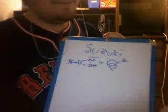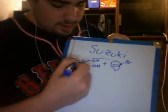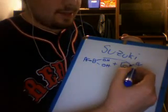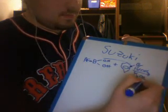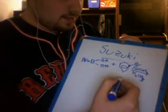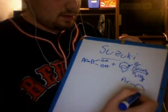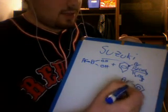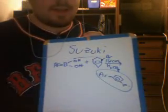It doesn't have to be aromatic — it can be anything as long as the carbon that it's attached to is sp2. So here it's sp2, here it's sp2. We react that with a palladium catalyst as well as potassium carbonate, and you'll be getting a product: the coupled aromatic. That ends the reaction overview.